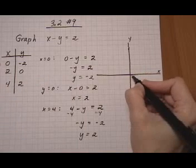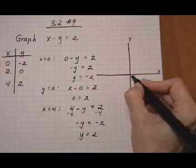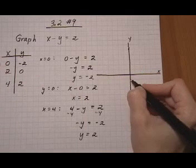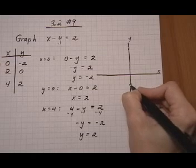So if x is zero, we start at the origin, we move zero for x. y is minus two, so we go down two. There's our first point.